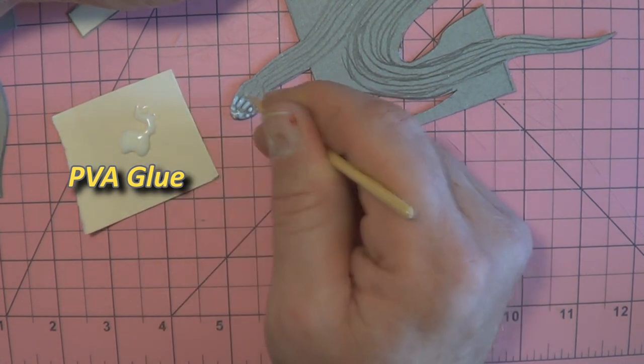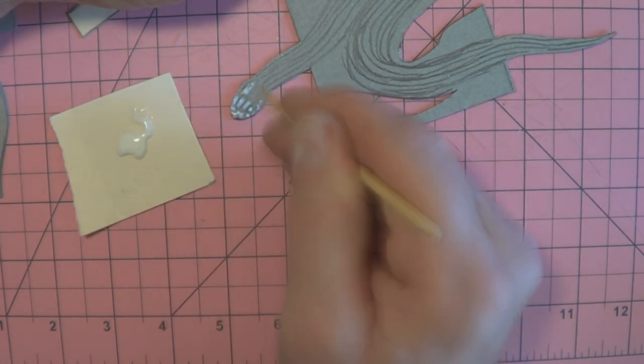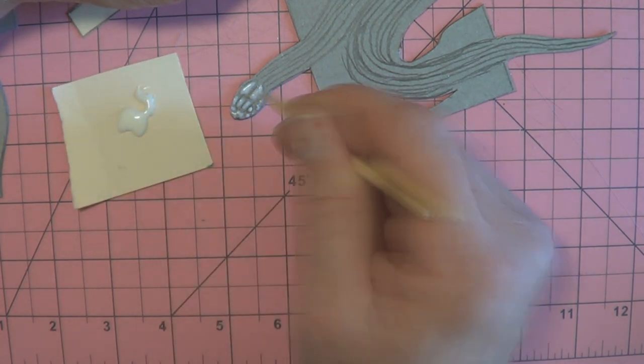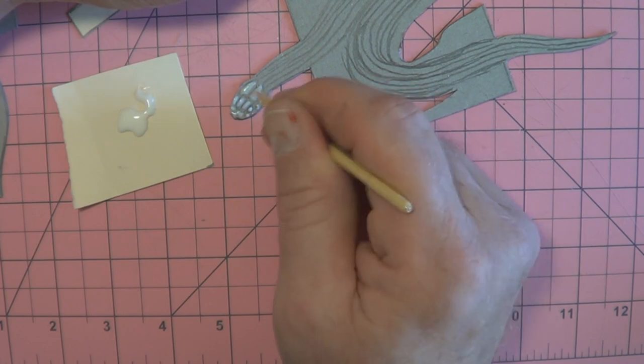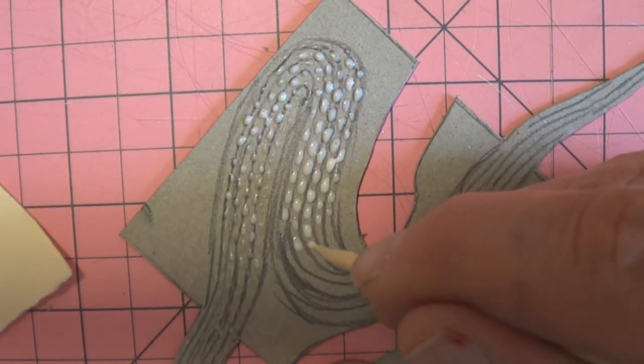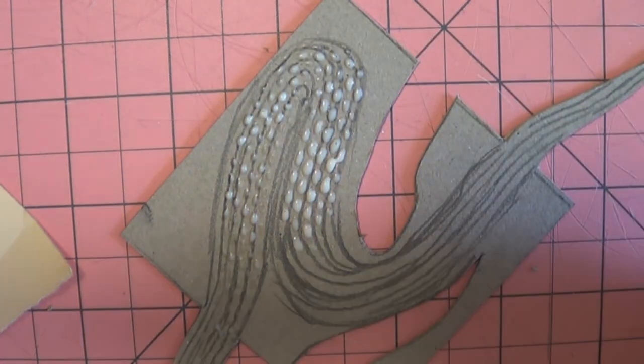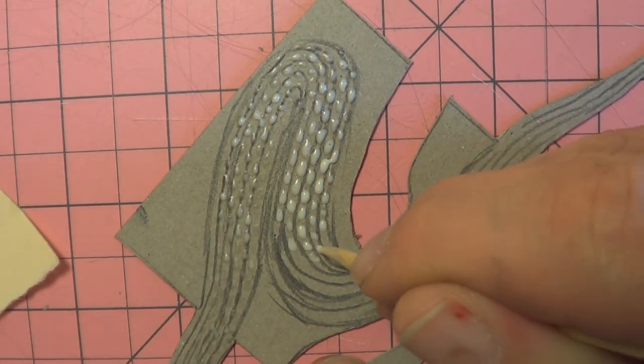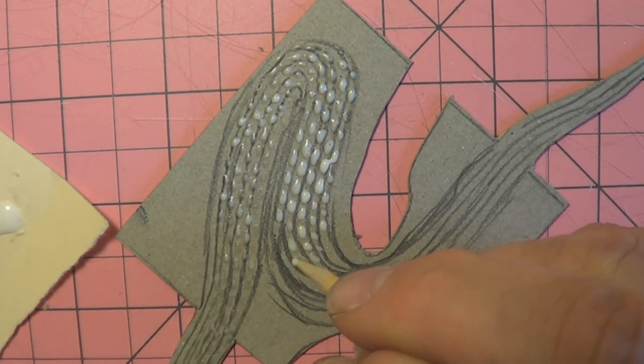Collographs are a really cool way of printmaking because it doesn't cost much. A bit of cardboard, a bit of PVA glue, and you have most of your plate to make a print with. And the way you print this, it can be printed either like a linocut with a briar or roller, or the way I'm going to do it, like an etching. It can also be printed in intaglio.